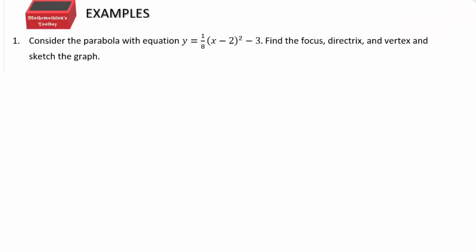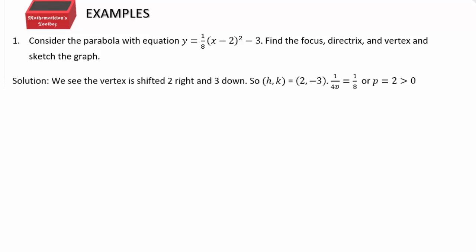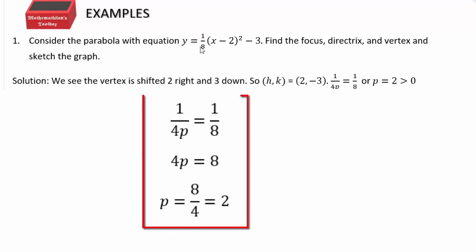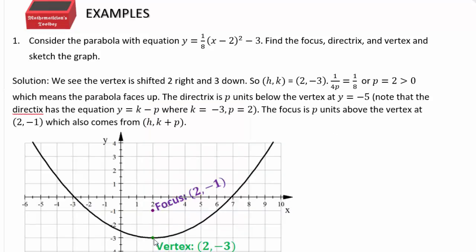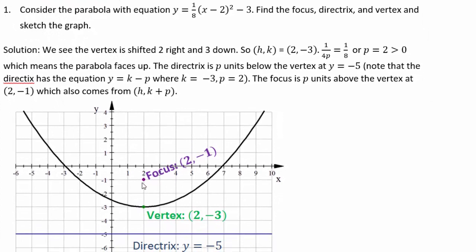Let's do a parabola example. Say the equation is y = (1/8)(x−2)² − 3. We already know the vertex is (2, −3). The new part is the coefficient 1/8, which equals 1/(4p). Solving gives p = 2. So the focus is p units above the vertex: the x-coordinate is 2 and the y-coordinate is −3 + 2 = −1. Focus is (2, −1), and going the same amount down gives the directrix y = −5.